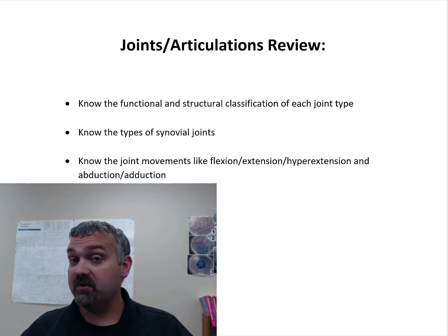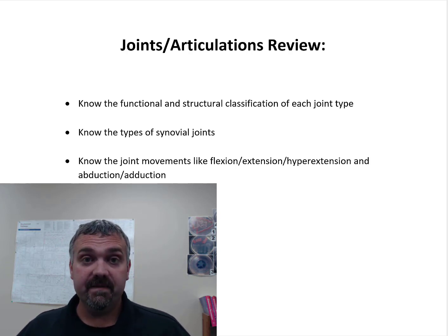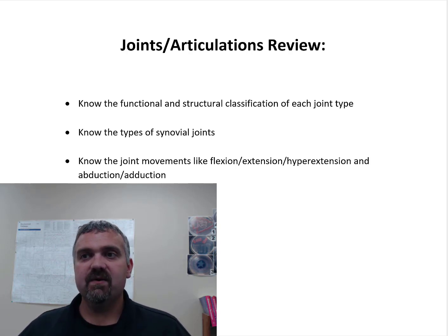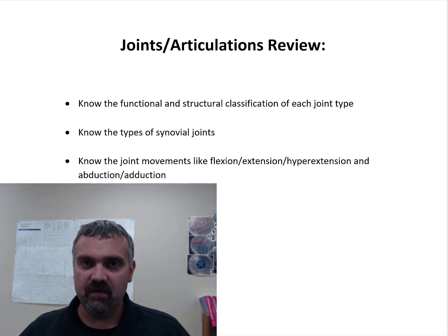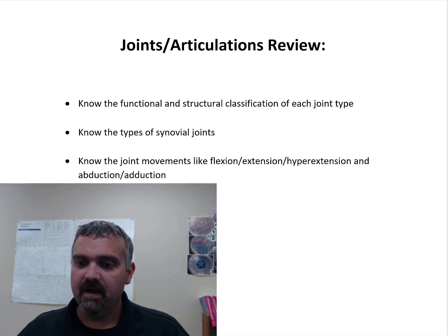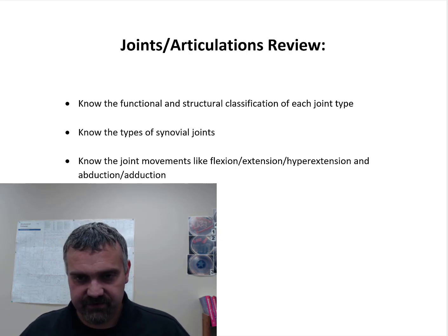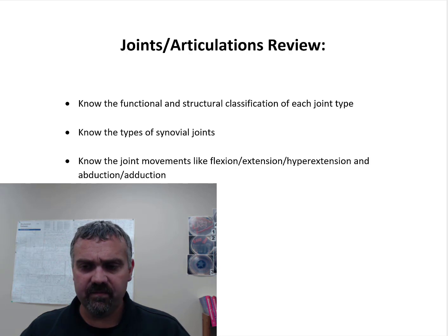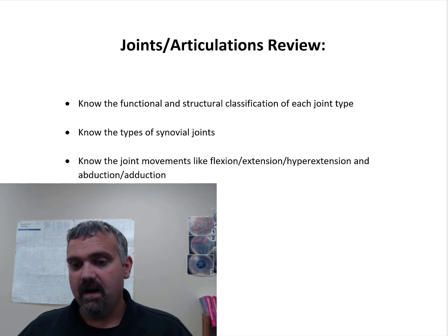Let's start functional. Functional classification is about how much movement you can get out of a joint. The first is the synarthrosis — that's going to be an immovable joint. There might be tiny bits of movement, but they essentially don't move. Then you have amphiarthrosis, which is slightly movable. Their primary job is not movement, but there is some. And then you have diarthrosis, which are your synovial joints — freely movable.